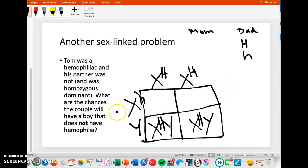So the question is, what are the chances that the couple will have a boy that does not have hemophilia? And that is 100%. There is no chance that the boy would have hemophilia if his mother is homozygous dominant.